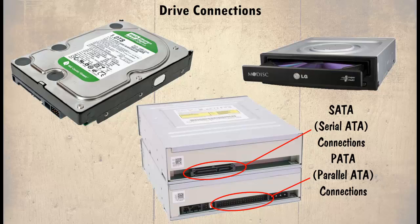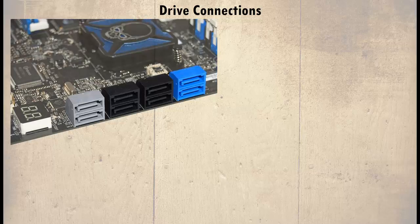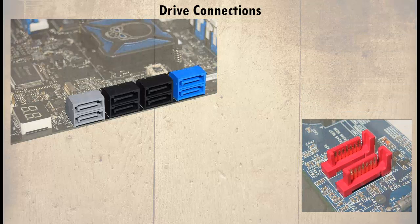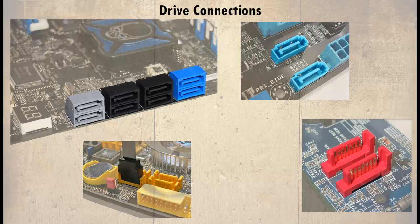The number of SATA ports found on a motherboard varies — here we can see eight, whilst here there are only two. We shall also find that the colour of these differ. In some cases this is to identify the different types on the motherboard. Throughout the course the term SATA is used generically.